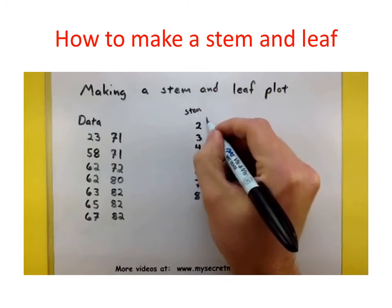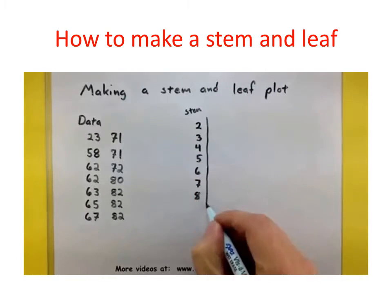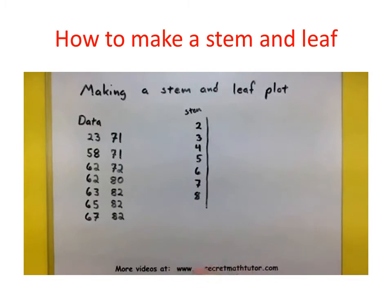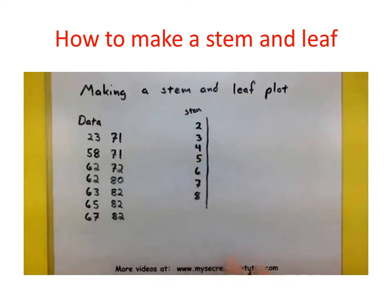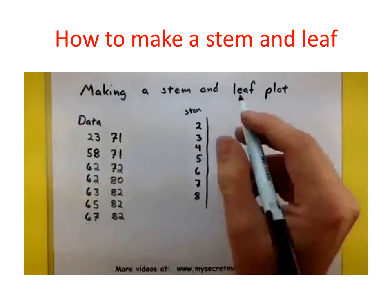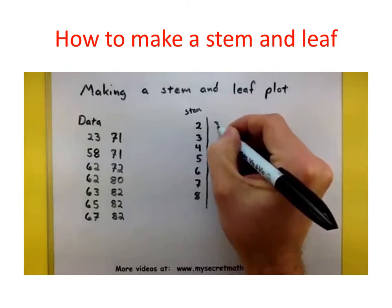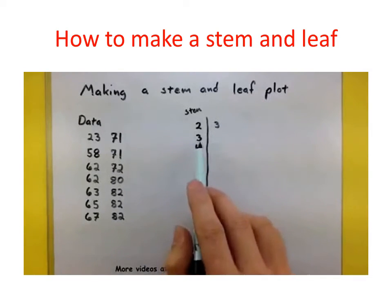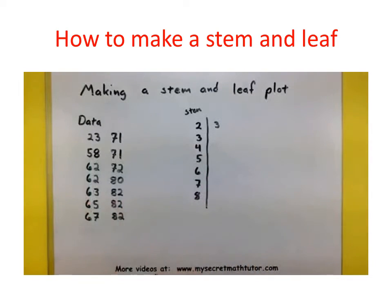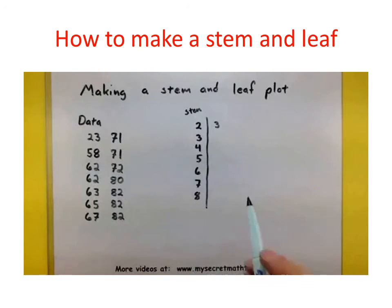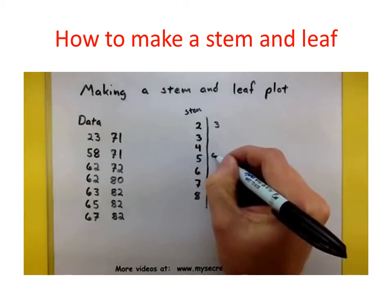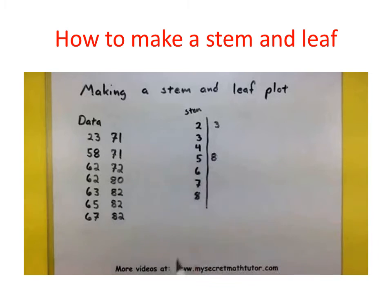Now I'm going to put a big vertical line to separate the stems from the leaves. Here's where I start to collect all the other numbers. If I have a 23, let's put the 3 there. When I get to the 3 stem, I don't have any 30s, so I'm going to leave that one blank. No 40s either — leave that blank. Here's a 58, so let's go ahead and put an 8 next to that 5.